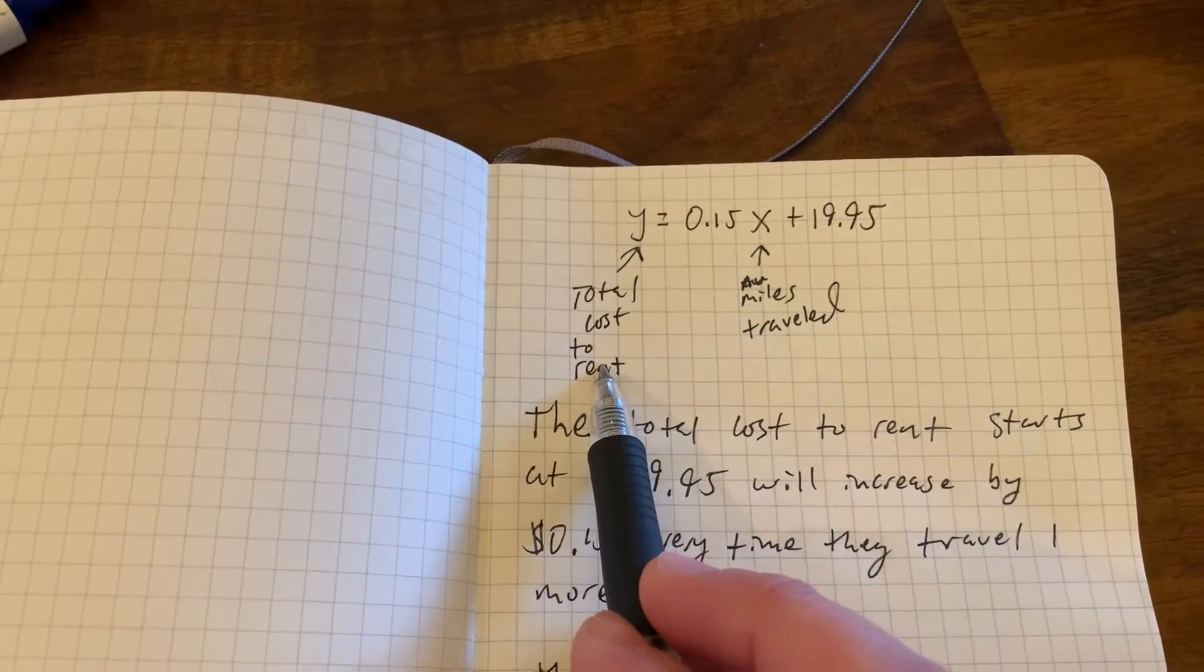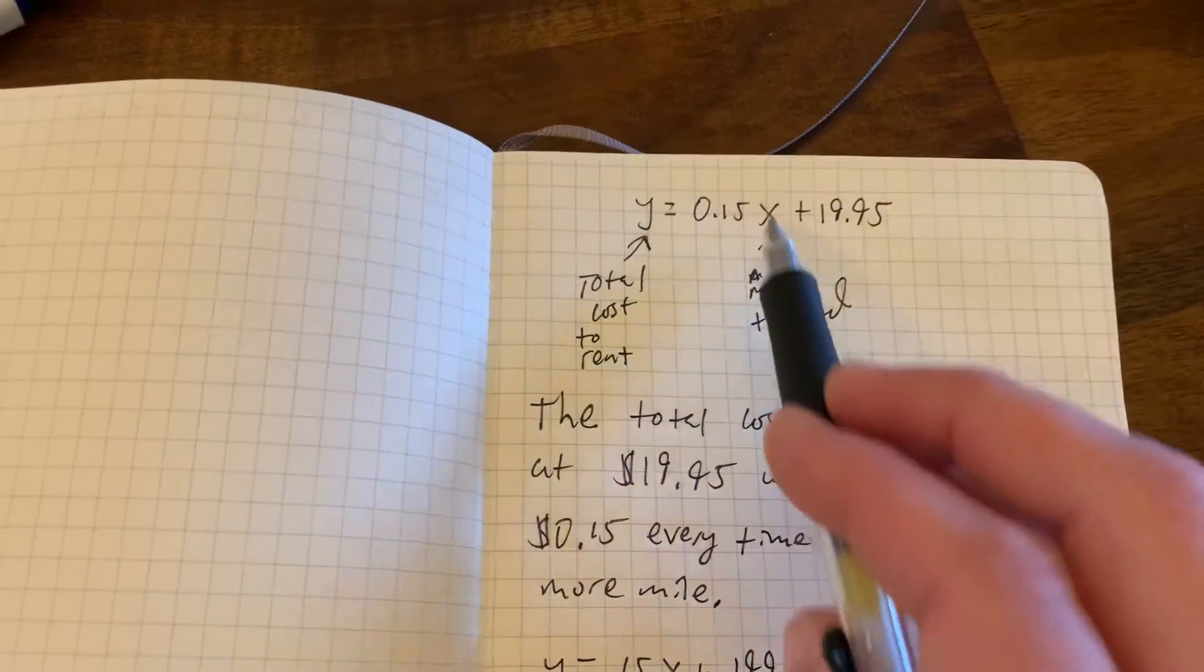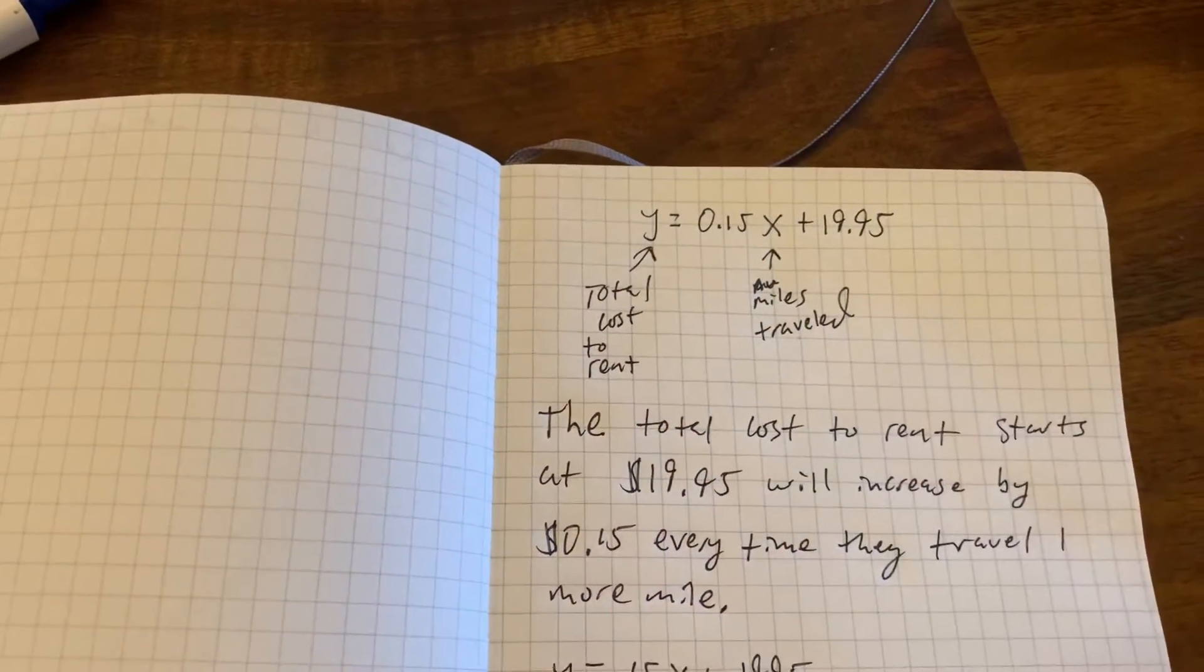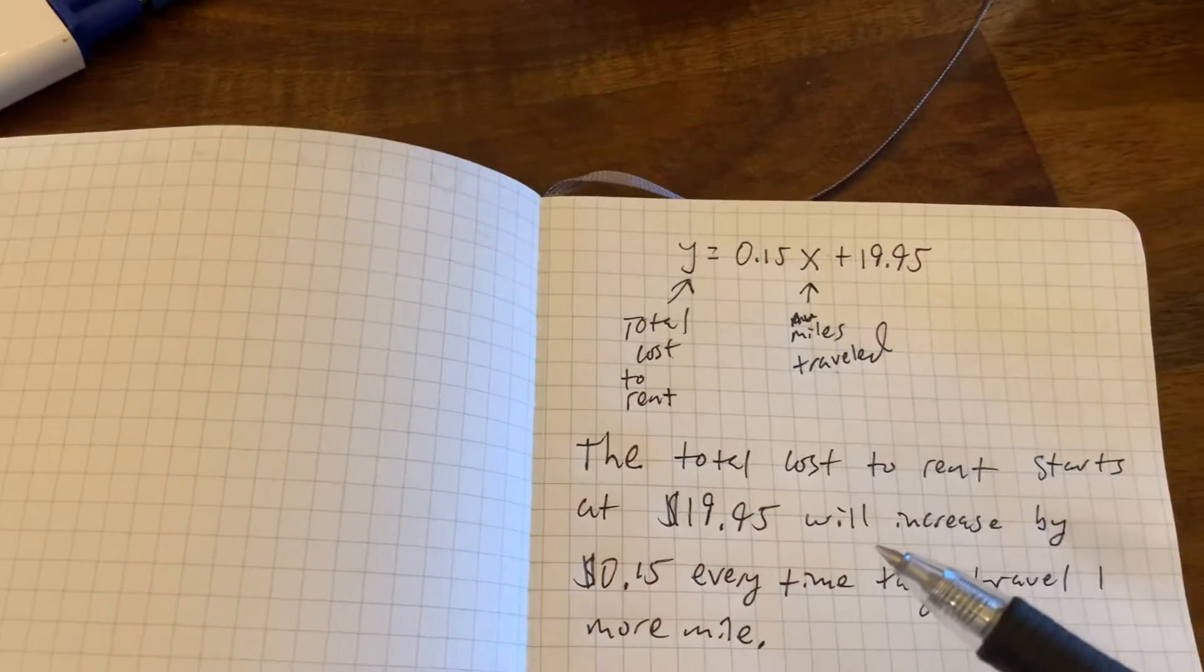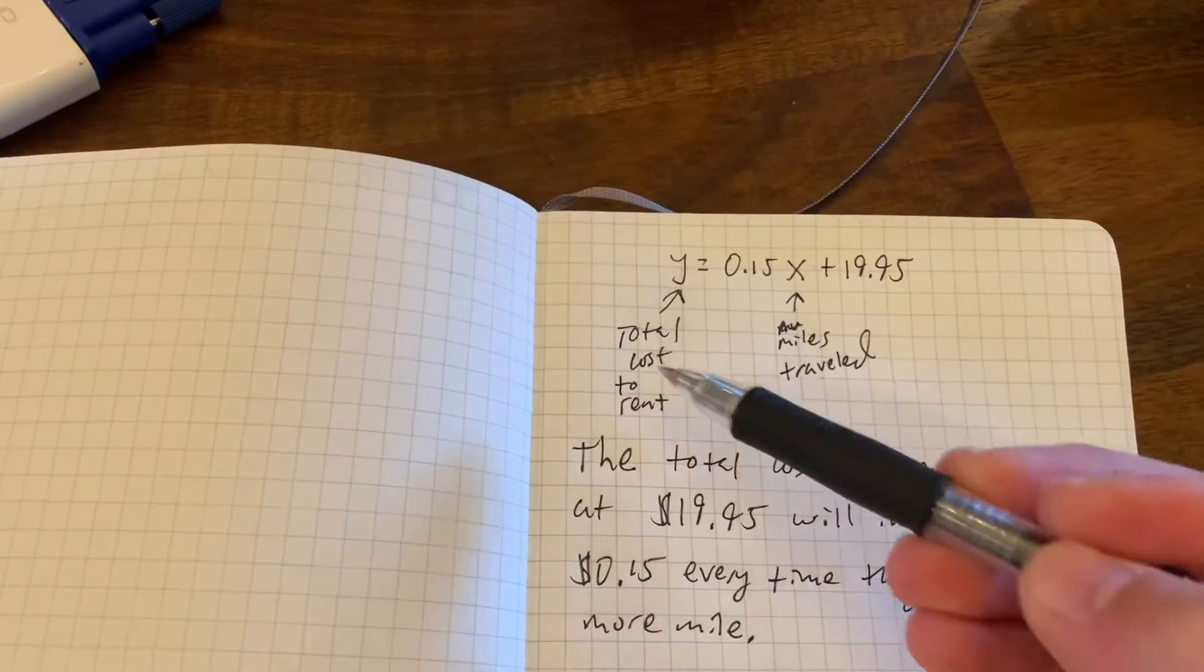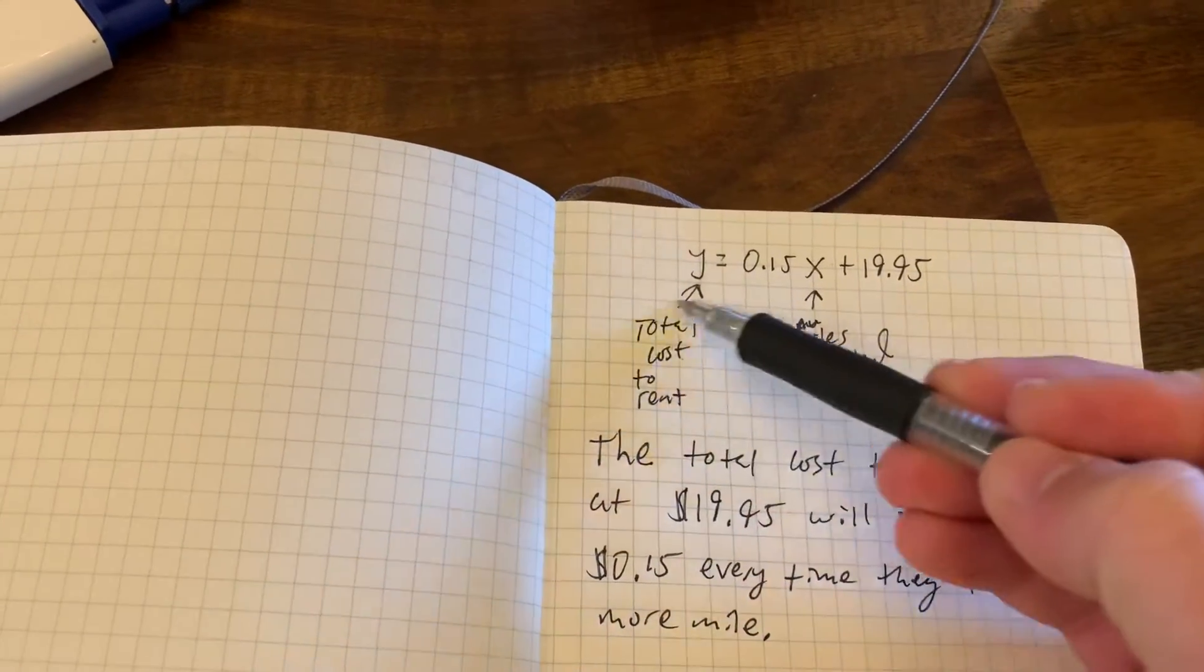$24.95 is not miles traveled. They gave us a dollar amount, which goes with costs, not miles. So in this problem, the total bill of $24.45 was the total cost.